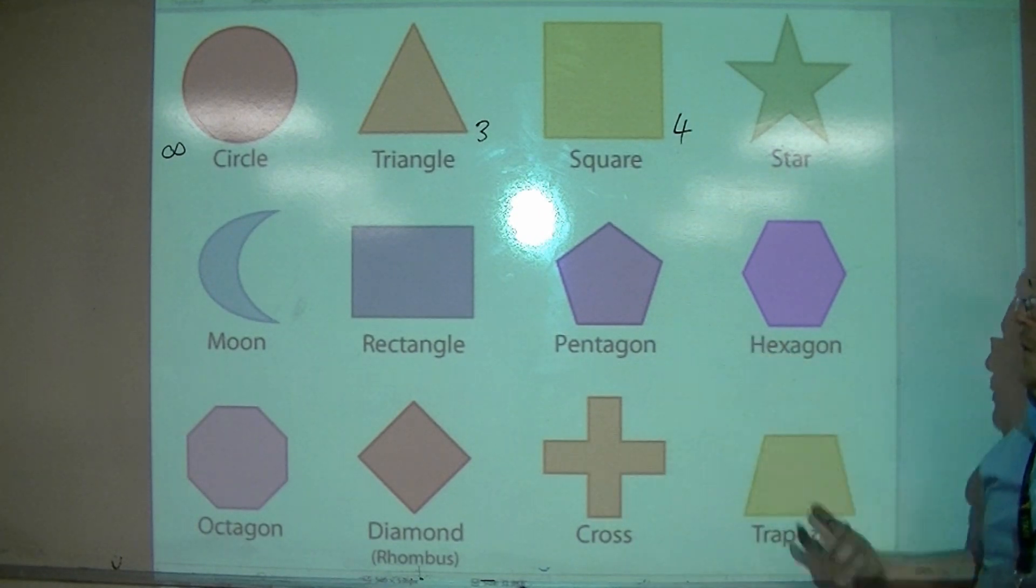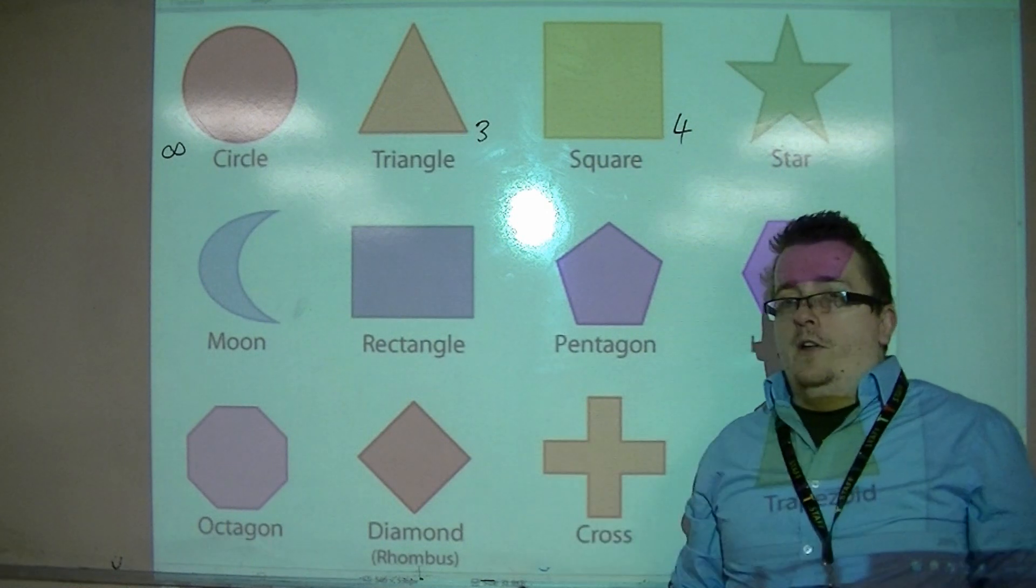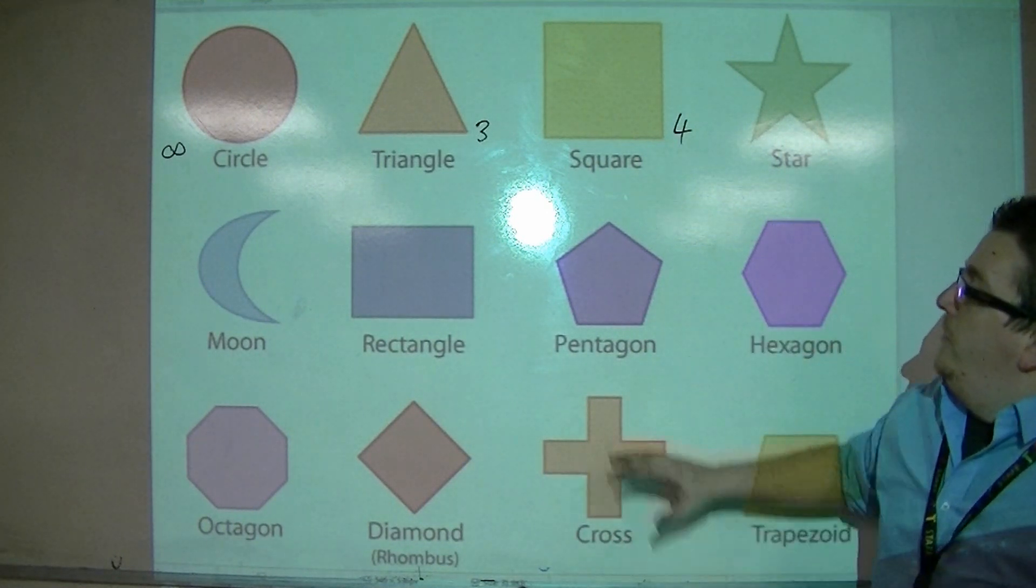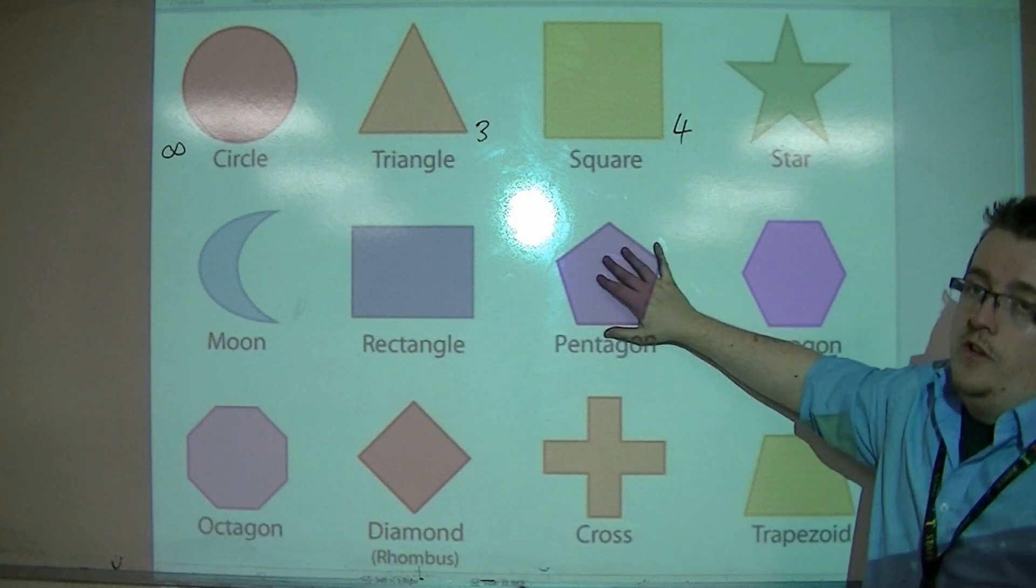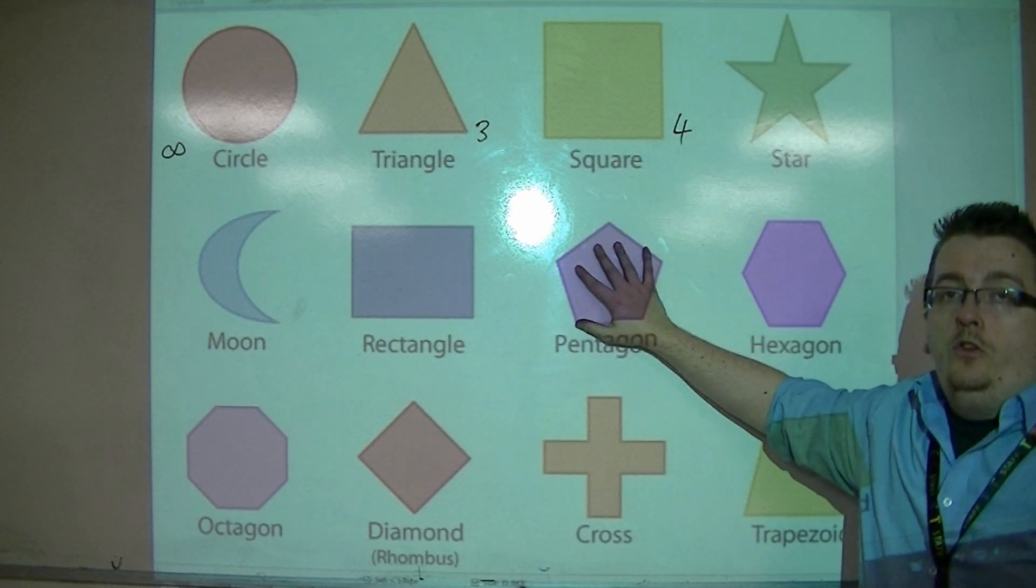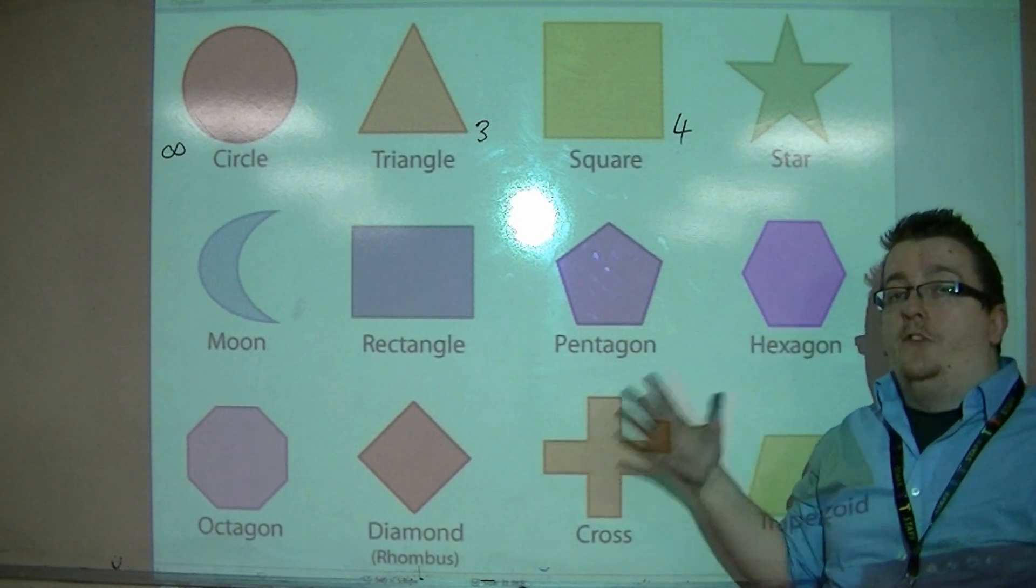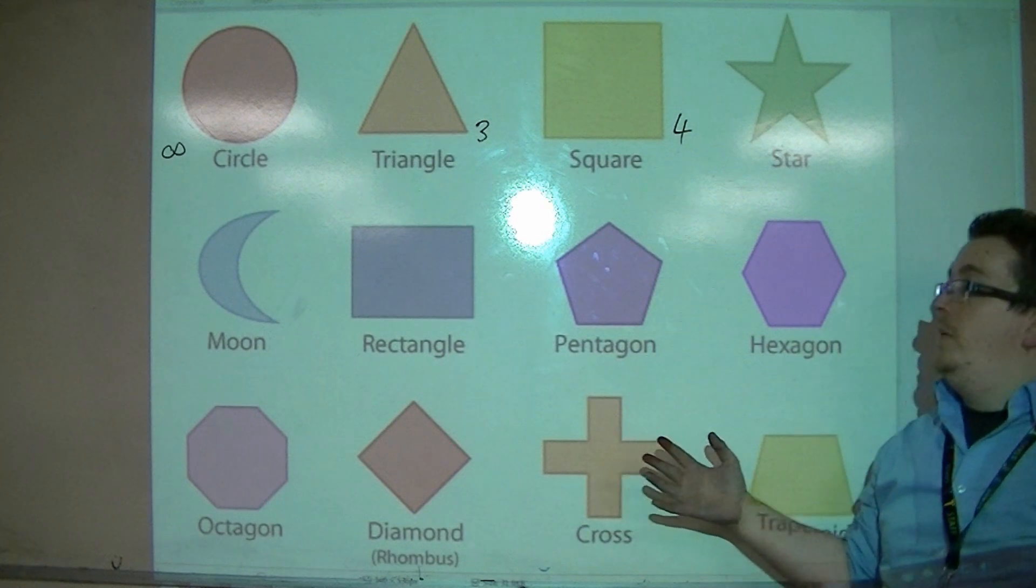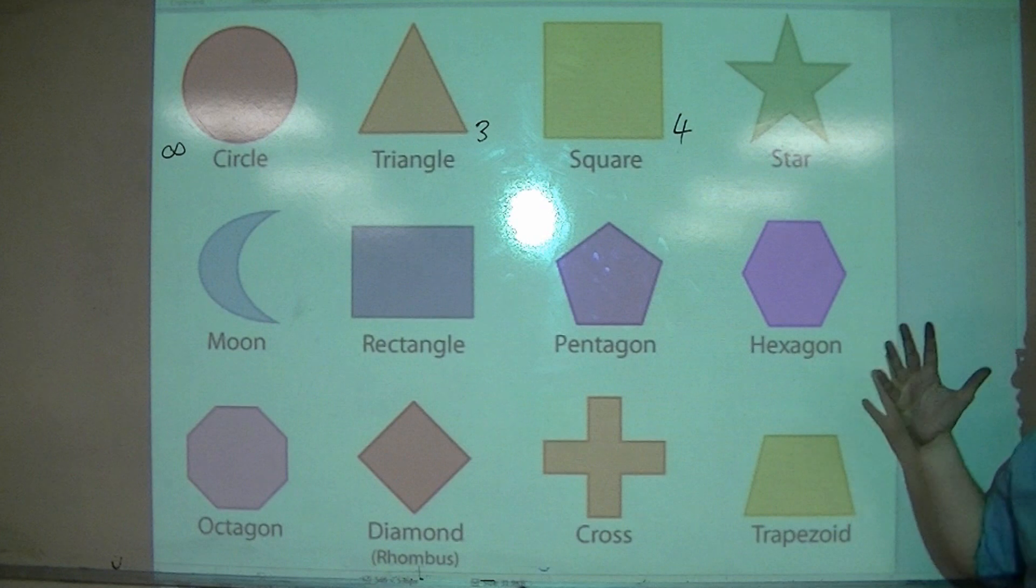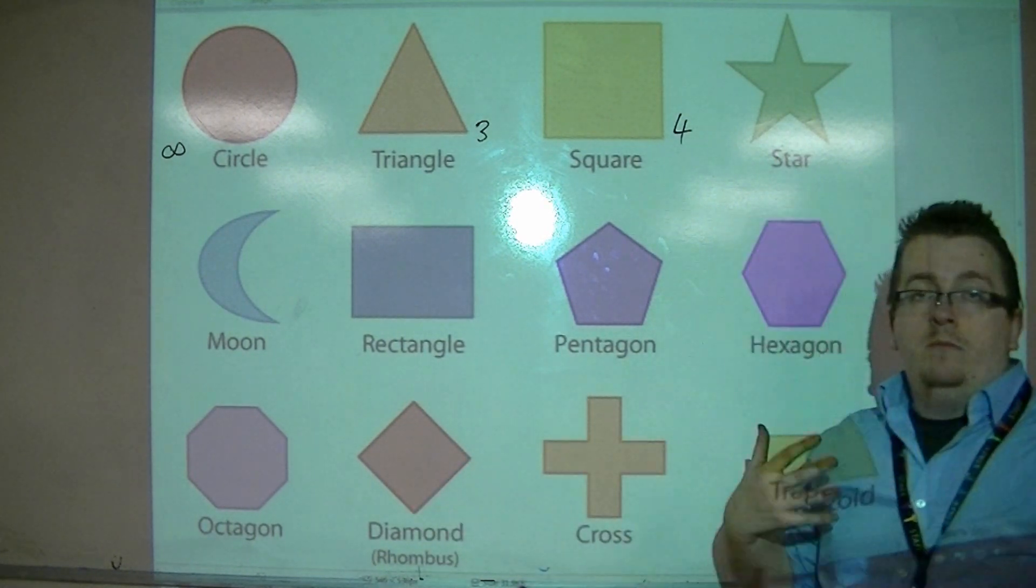You'll find when you have a go at this that it follows much the same rules as the line of symmetry did. For a regular pentagon, the number of ways that you can fit that shape into itself is actually five. It's a five-sided shape. It had five lines of symmetry. It has order rotation five. The hexagon will have order rotation six, and the octagon will have order rotation eight.